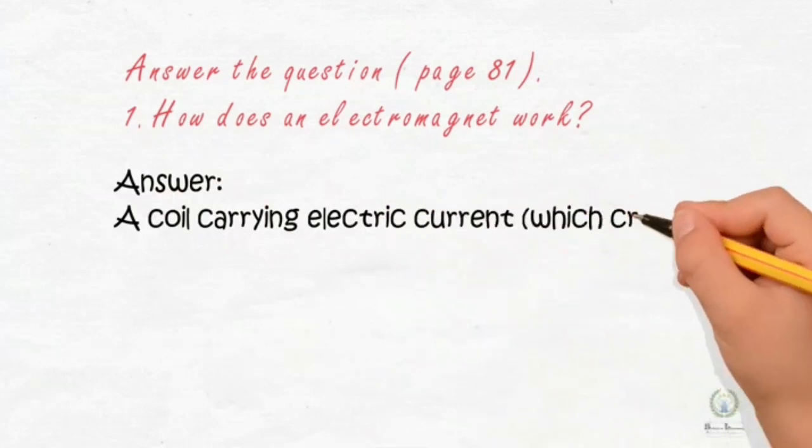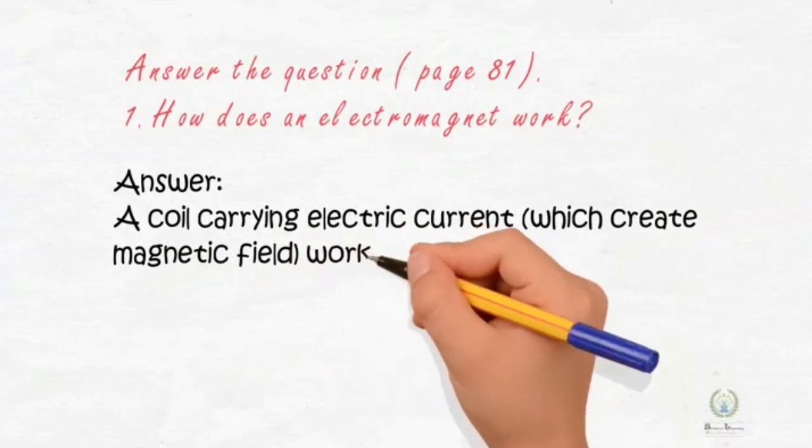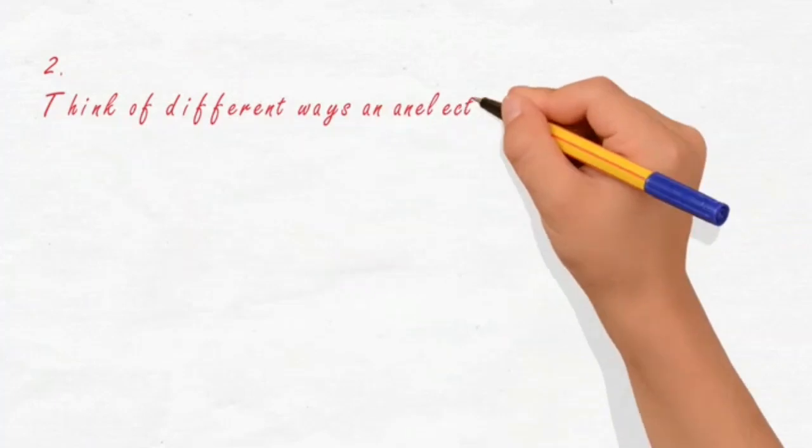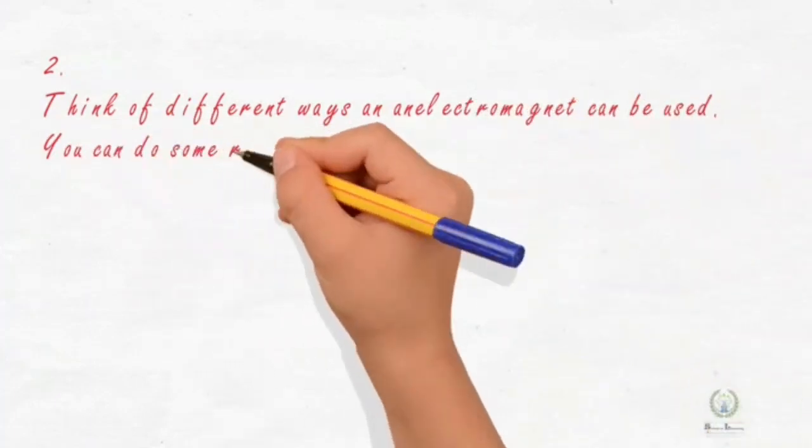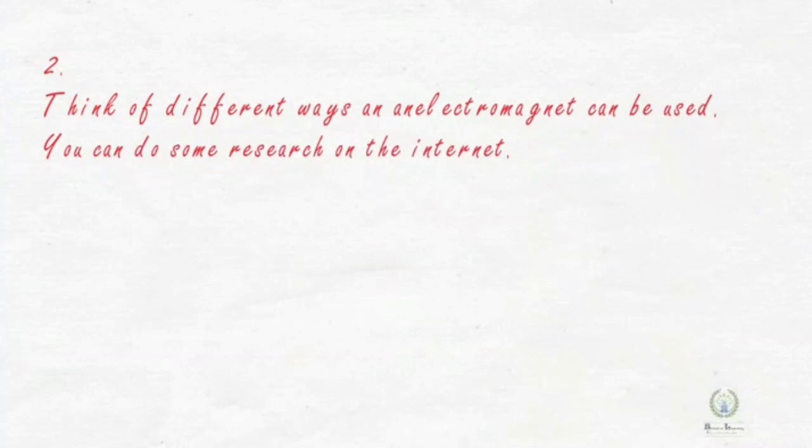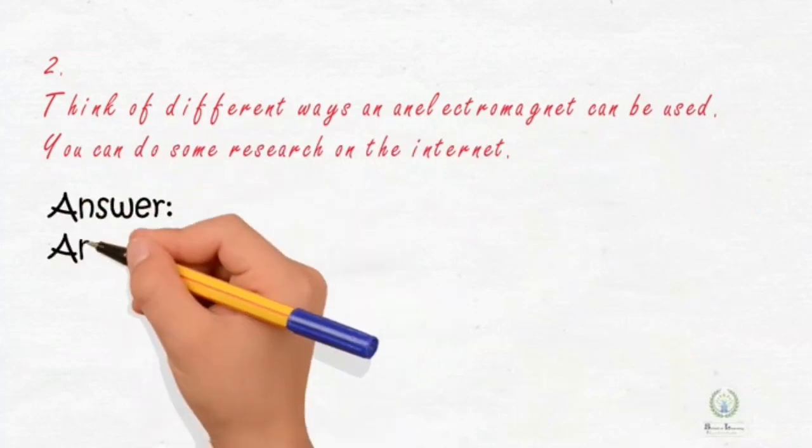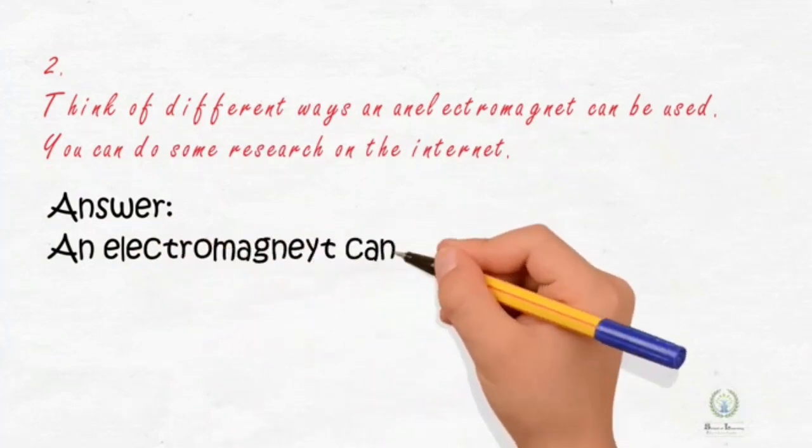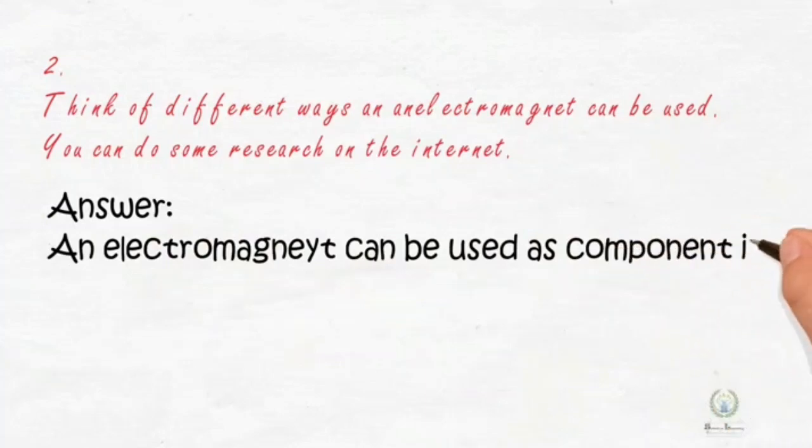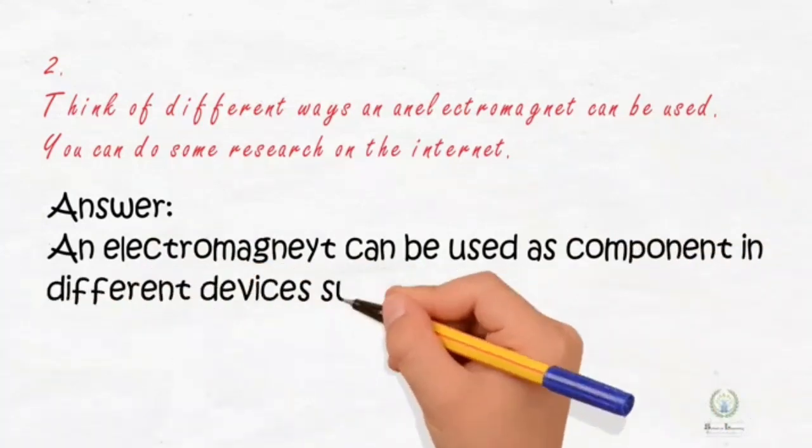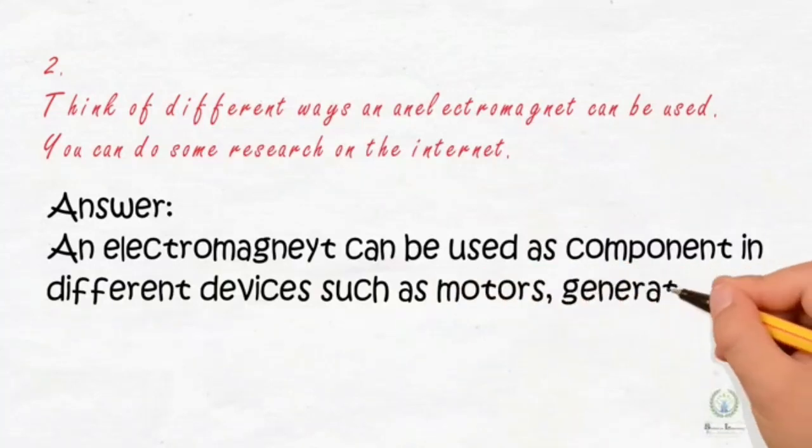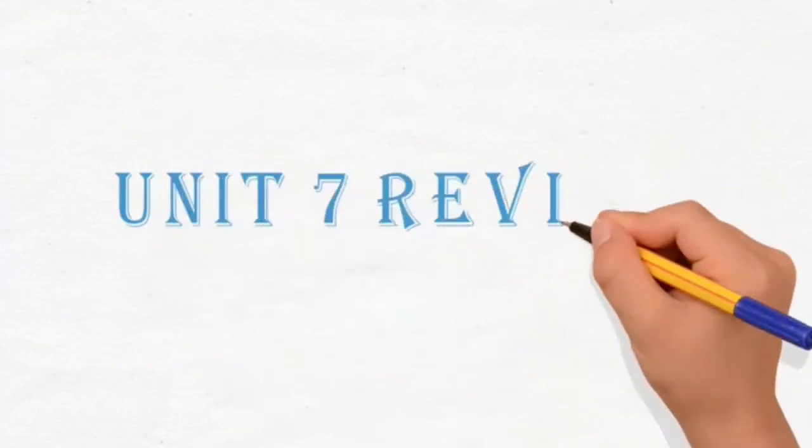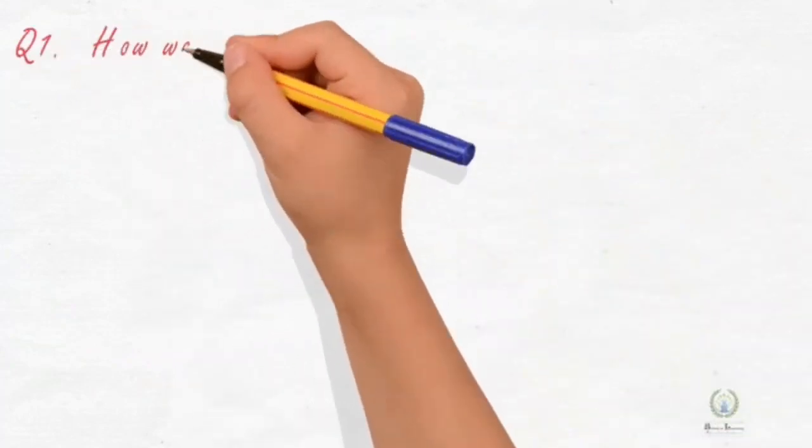Which create magnetic field works as electromagnet. Question number two is: think of different ways an electromagnet can be used. You can do some research on the internet. We can write the answer is: an electromagnet can be used as component in different devices such as motors, generators, loudspeakers, etc.